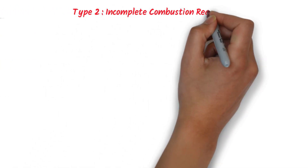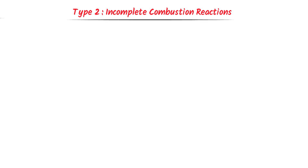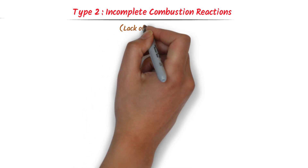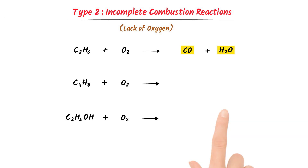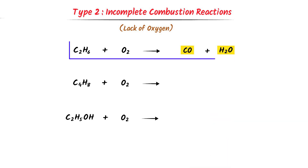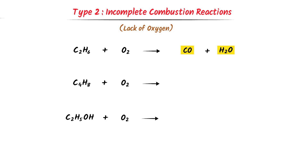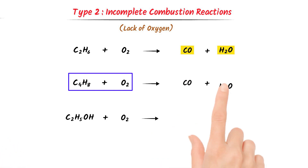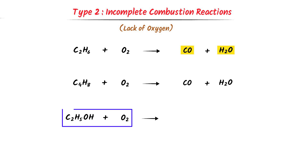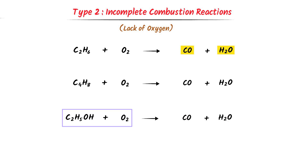The second type is incomplete combustion reactions. These reactions are carried out in the presence of a lack of oxygen. In case of incomplete combustion reactions, carbon monoxide gas and water is formed. Ethylene reacts with oxygen gas to form carbon monoxide plus water. Butene reacts with oxygen gas to form carbon monoxide plus water. And ethanol reacts with oxygen gas to form carbon monoxide plus water.